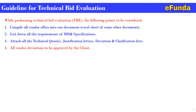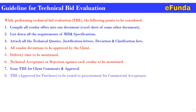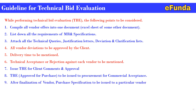Fourth, all vendor deviations to be approved by the client. Fifth, delivery time to be mentioned. Six, technical acceptance or rejection against each vendor to be mentioned. Seven, issue TBE for client comments or approval. Eight, TBE approved for purchase to be issued to procurement for commercial acceptance. Nine, after finalization of a vendor, purchase specification to be issued to the particular vendor by procurement. To understand this technical bid evaluation, one can refer to our slide or video section where we have completed the formats of the TBE, and that will be helpful to understand the guidelines for preparation of the technical bid evaluation.